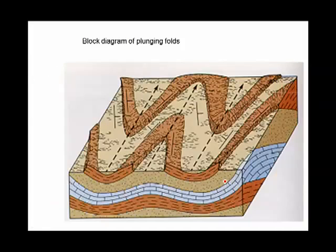Once again, a block diagram. You have the diagram showing the direction of the plunge, both of the anticlines and synclines, and the Vs coming either toward us or away from us.